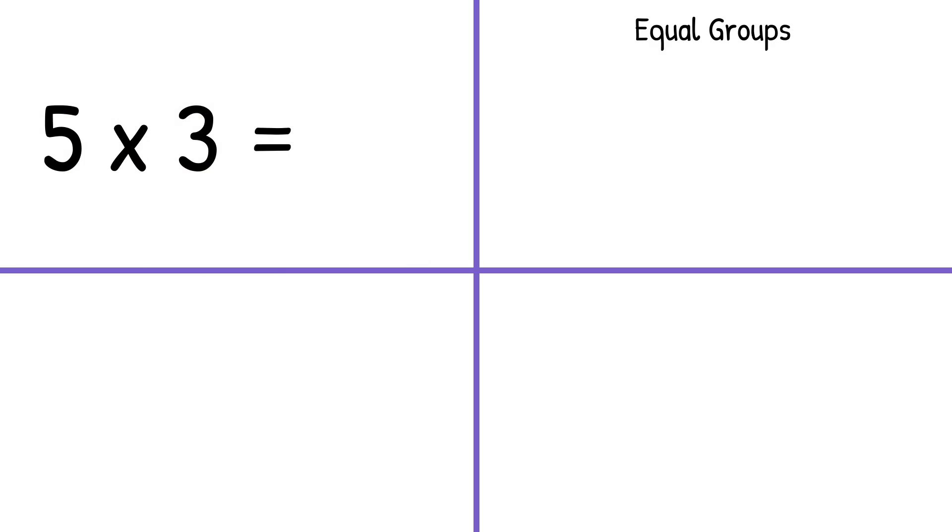In the second section, I want you to model this multiplication equation using equal groups. In the third section, I want you to model this equation using repeated addition. And in the fourth section, I want you to model this equation using an array. Remember, the first factor tells how many groups or rows, and the second factor tells how many in each group or in each row.